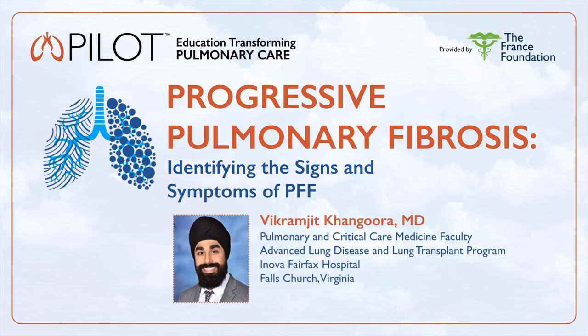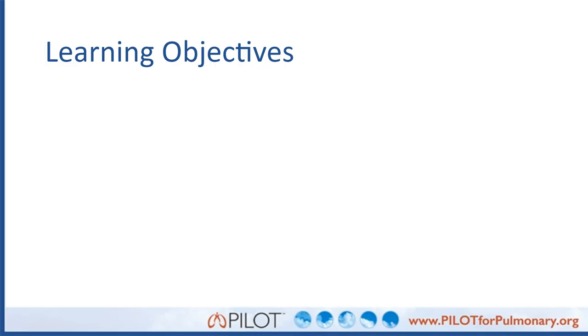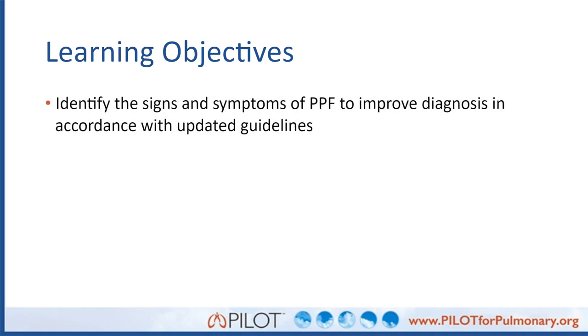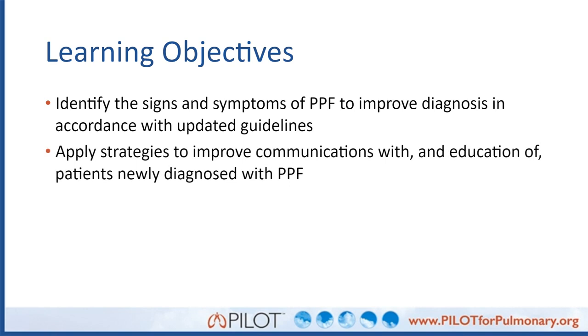Today, we're going to be talking about progressive pulmonary fibrosis — improving recognition, diagnosis, and patient communications. I'm Vic Hangora, pulmonary critical care faculty with the ANOVA Advanced Lung Disease and Lung Transplant Department, as well as the Director of Advanced Obstructive Lung Diseases at ANOVA Fairfax Hospital in Falls Church, Virginia. A couple of learning objectives: we want to identify the signs and symptoms of PPF to improve diagnosis in accordance with the updated guidelines, and apply strategies to improve communication with and education of patients newly diagnosed with PPF.